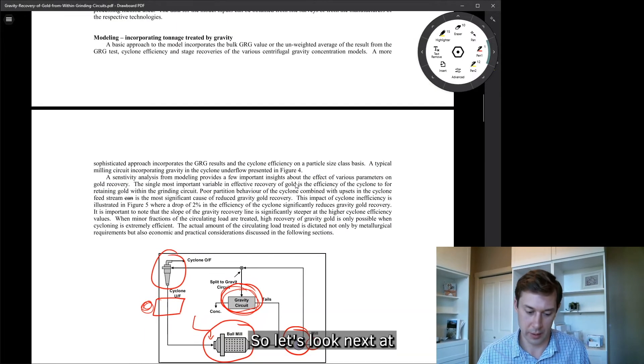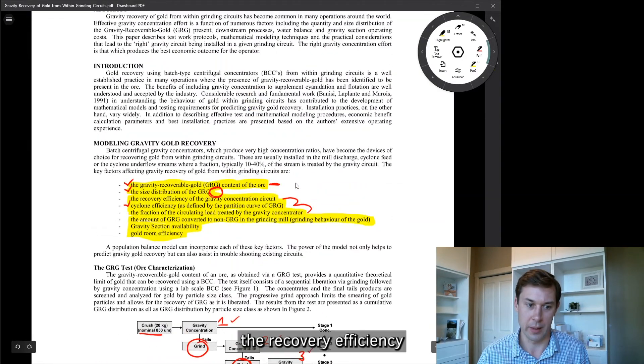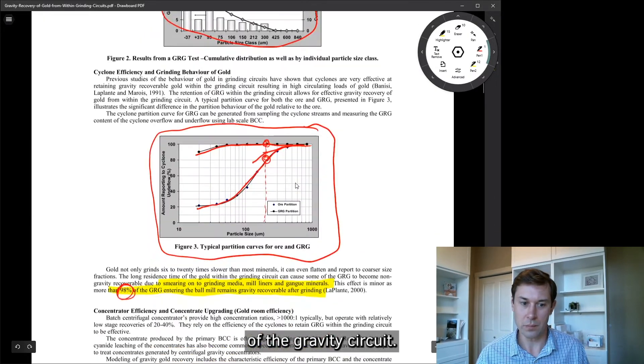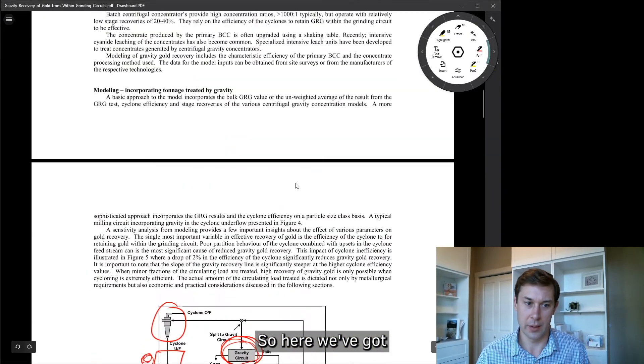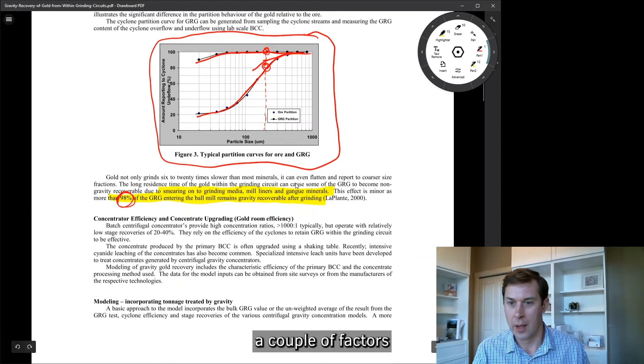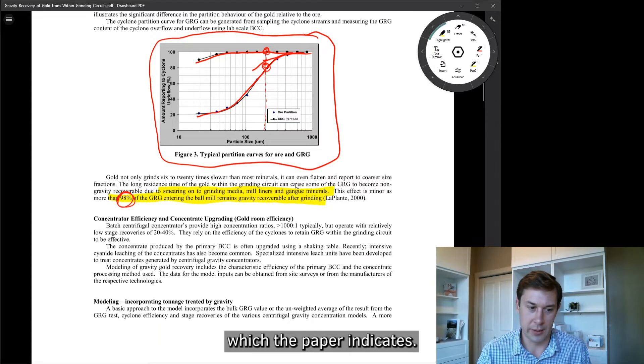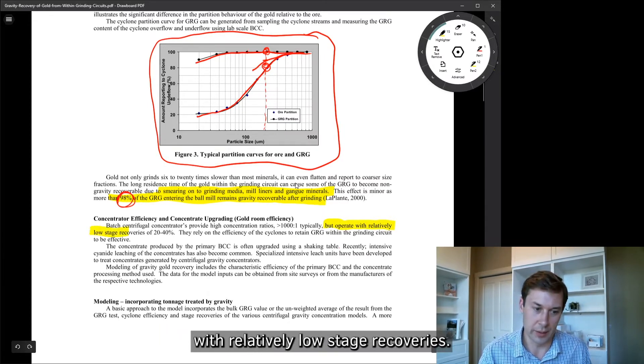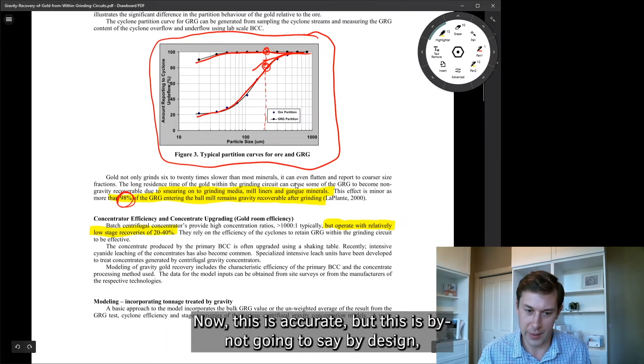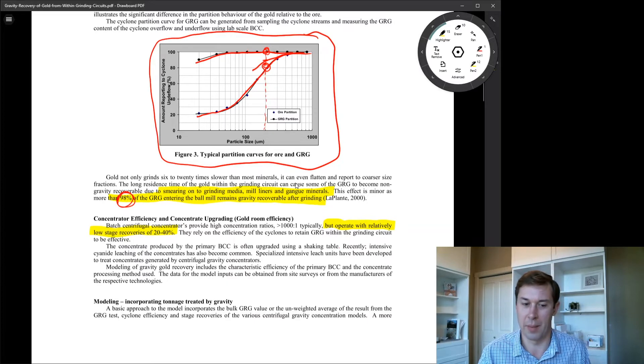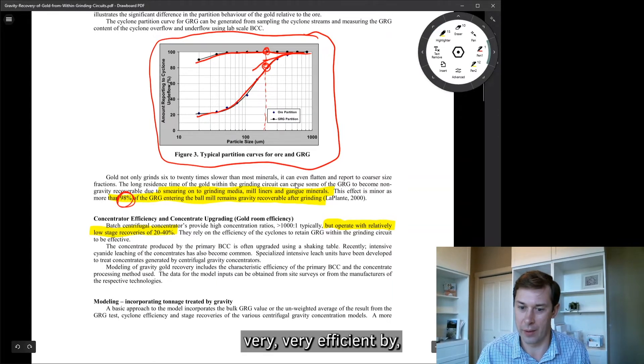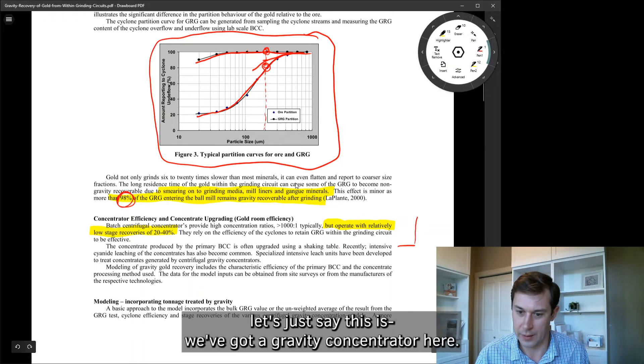So let's look next at the recovery efficiency of the gravity circuit. So here we've got a couple factors. The paper indicates generally gravity concentrators operate with relatively low stage recoveries. Now this is accurate, but this is by, I'm not going to say by design, but intentionally based on the operation.